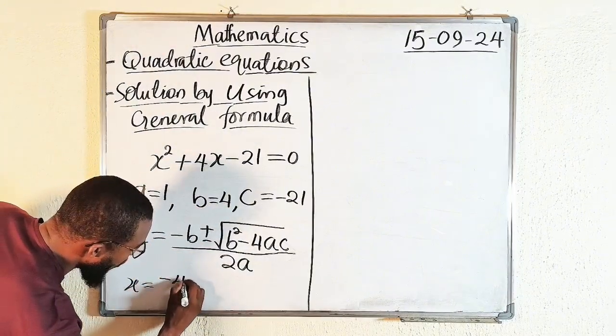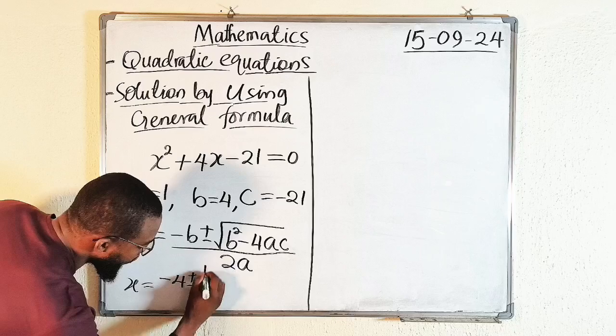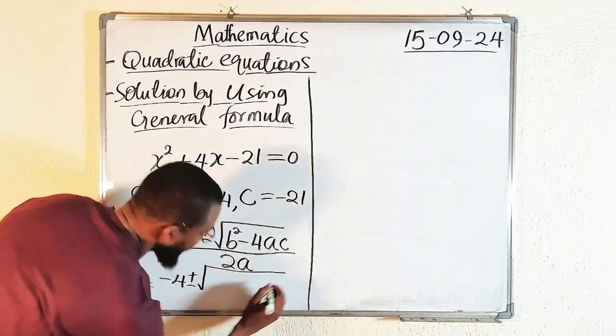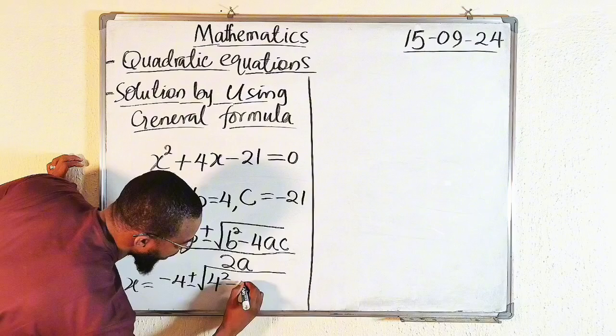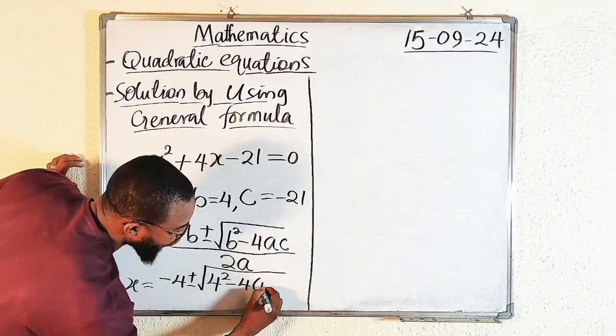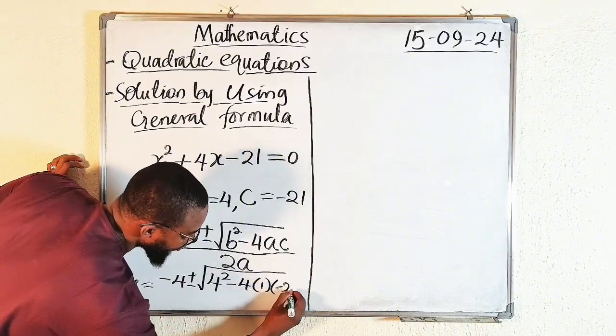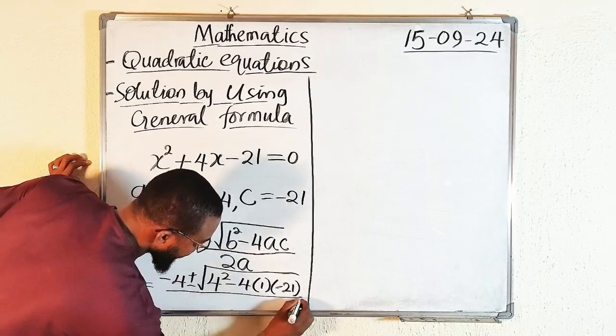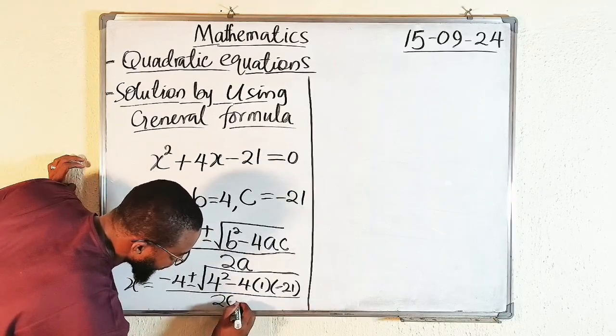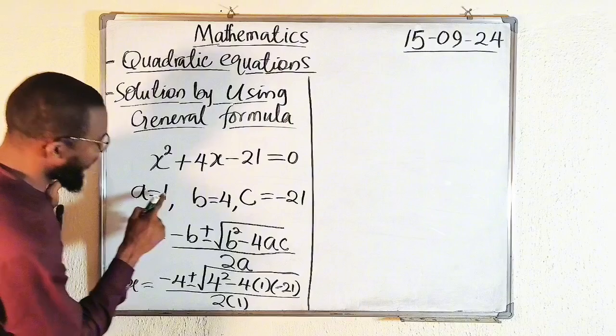We have minus 4 plus or minus square root of B squared, that is 4 squared minus 4. A is 1, C is negative 21. The whole of this should be divided by 2 multiplied by A. A is 1. You can see that here.